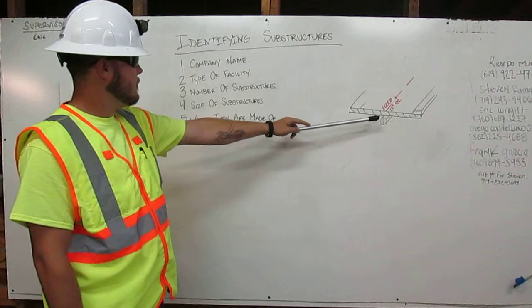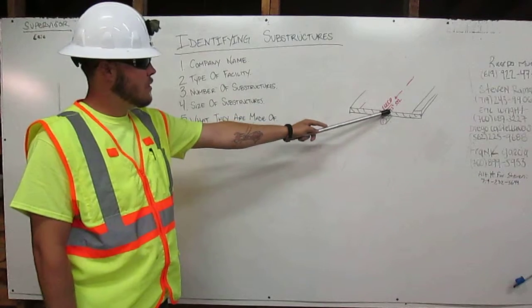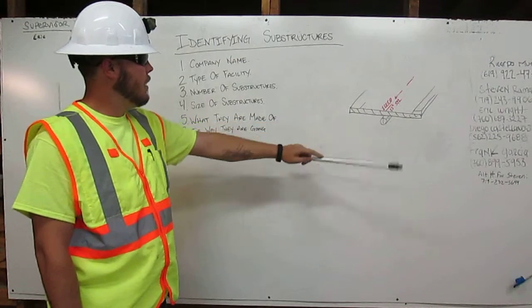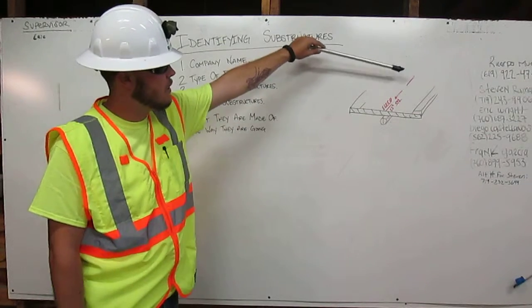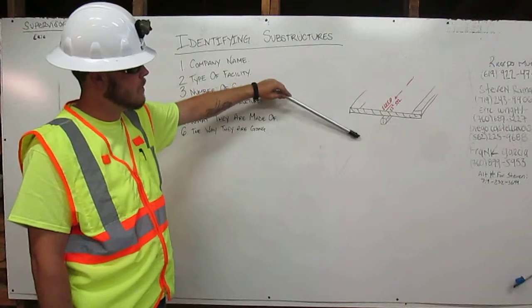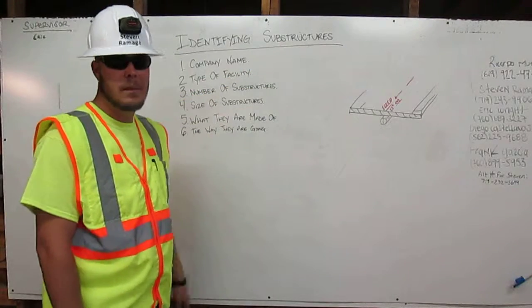There's one substructure. The size of the substructure is 12 inches. It's made of steel. And the direction it's going is from up the street here, down here, marked with the arrow. Thank you.